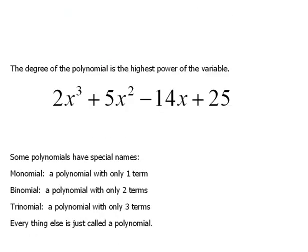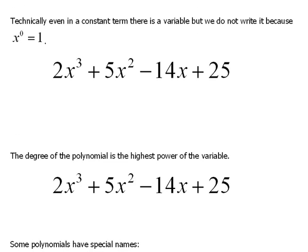Alright. Now, technically, if we wanted to get really specific about it, then even when we have a constant term, there technically is a variable. If I were to have x to the 0 power, if you'll remember back from our exponent rules, anything to the 0 power is a 1.